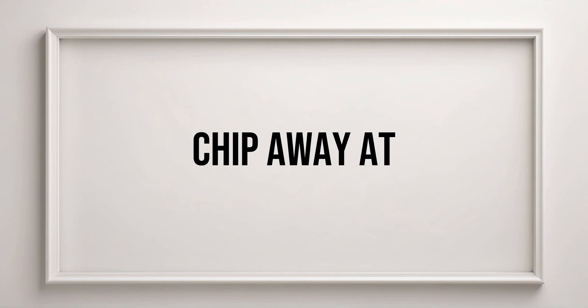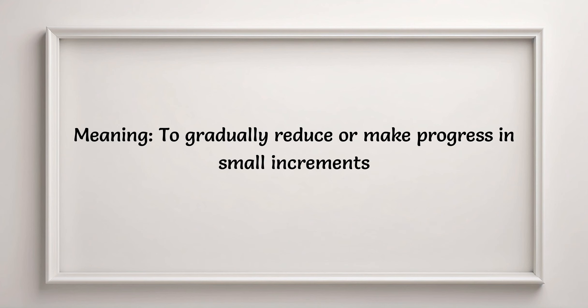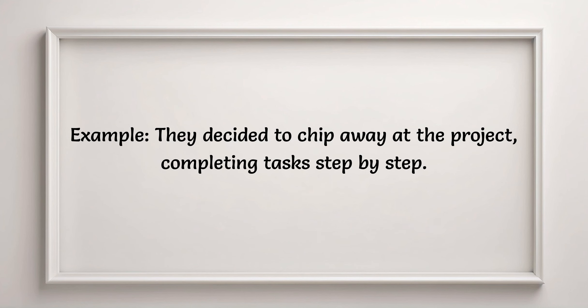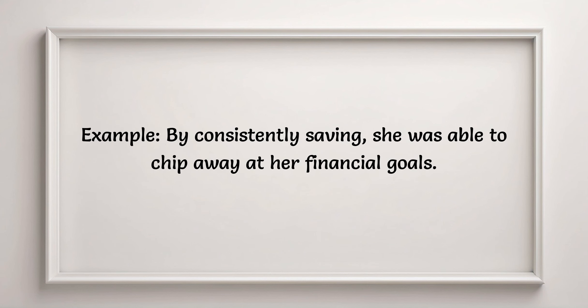Chip away at. Meaning: to gradually reduce or make progress in small increments. Example: they decided to chip away at the project, completing tasks step by step. Example: by consistently saving, she was able to chip away at her financial goals.